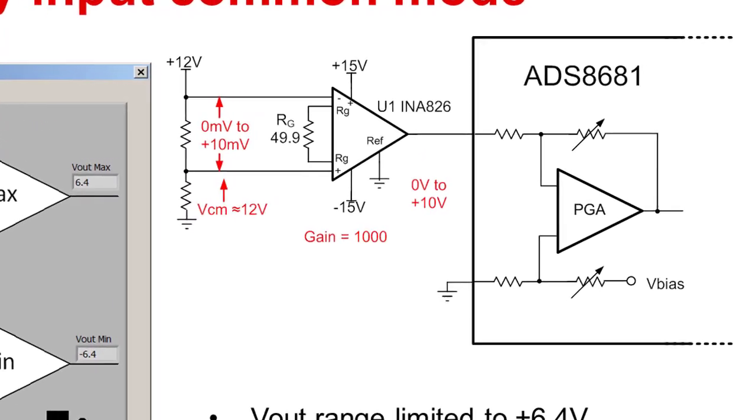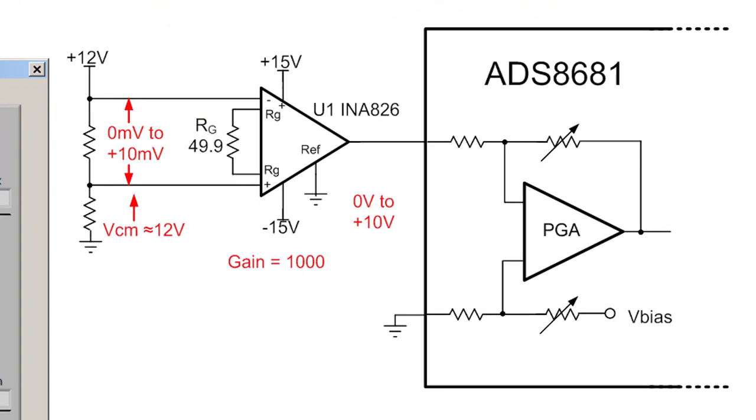Here we show an example of a circuit that violates the common mode limitations. The goal for this circuit is to translate a 0 volt to 10 millivolt input signal to a 0 volt to 10 volt output signal. The circuit is a high side current shunt monitor where the common mode voltage is very close to 12 volts.